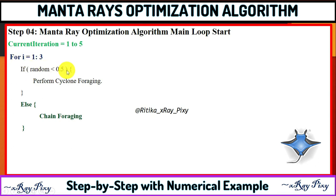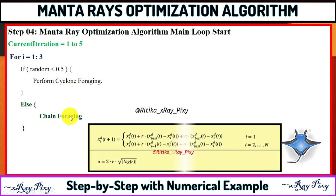If this condition is true, where the random value is a normally distributed random value within 0 and 1, we select a random value. If this condition is true, then we perform cyclone foraging; otherwise, we perform chain foraging.